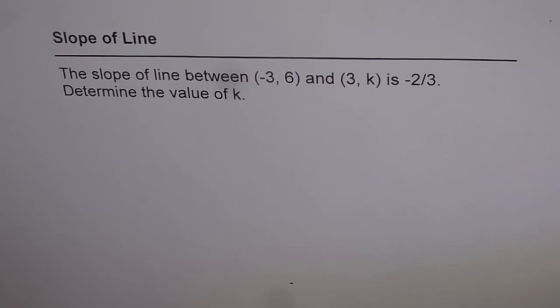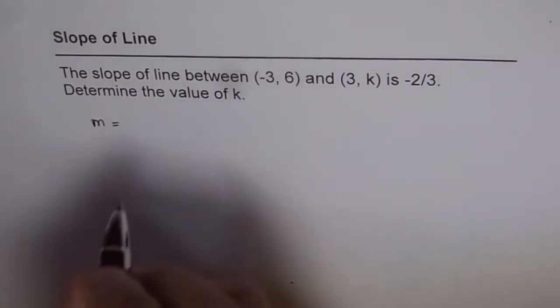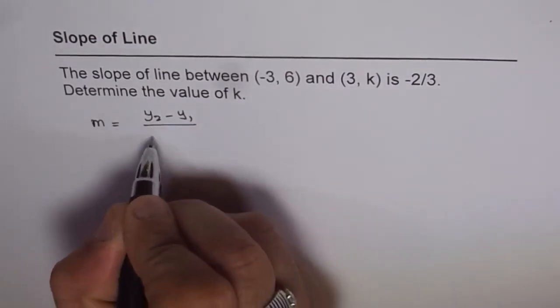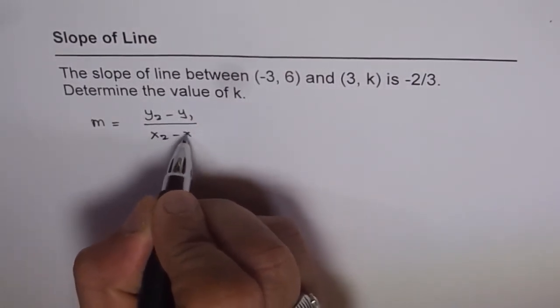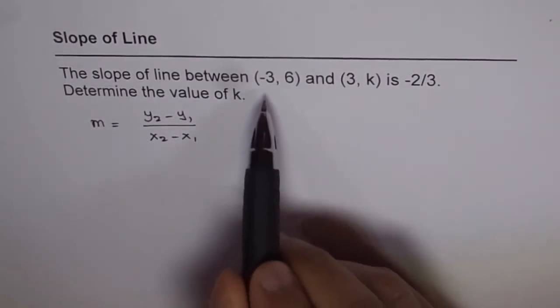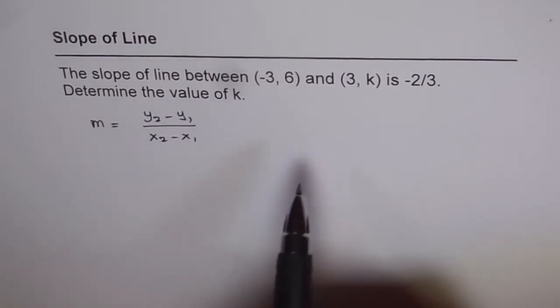Now for such problems we should write what slope is. We know slope m equals y2 minus y1 over x2 minus x1. In this formula we are given two points. Any point can be considered as x1, y1 and x2, y2.